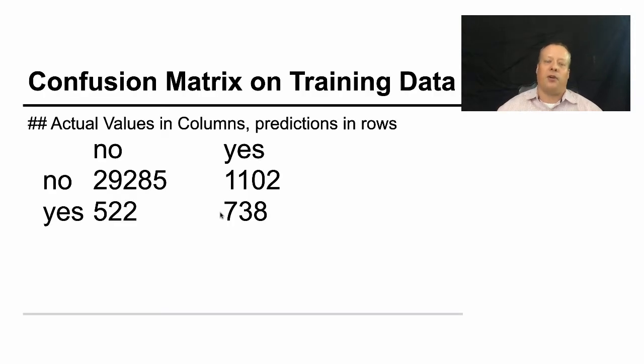We can also create the confusion matrix. Now, you saw the confusion matrix in session two, but I didn't call it that specifically. But that's essentially what it is, because it shows you what the actual values are and what the predictions are. And in this case, this decision tree mislabels 522 no's as yeses and 1,102 yeses as no's. And that's on the training data, which is always important to see.